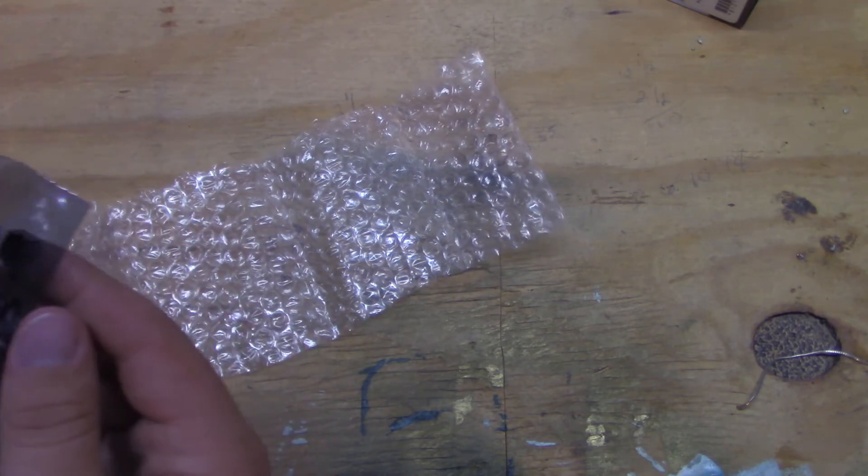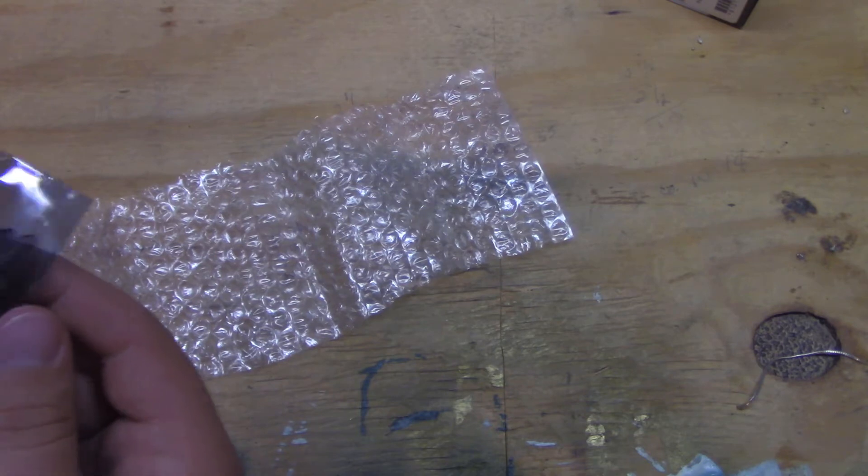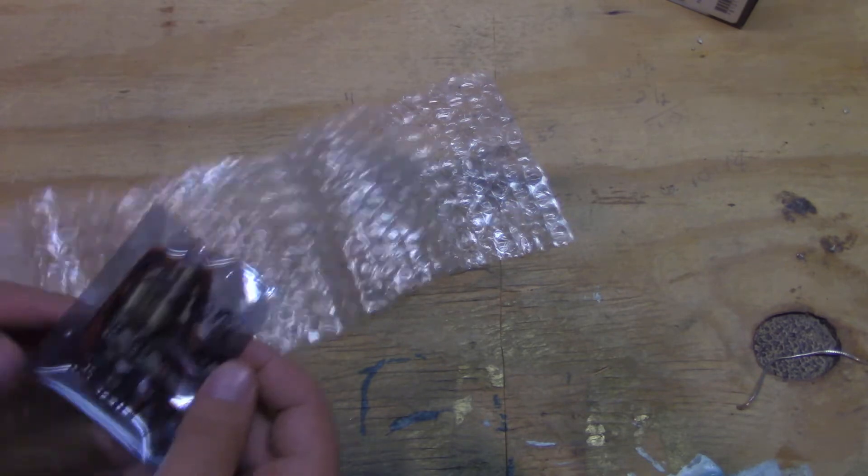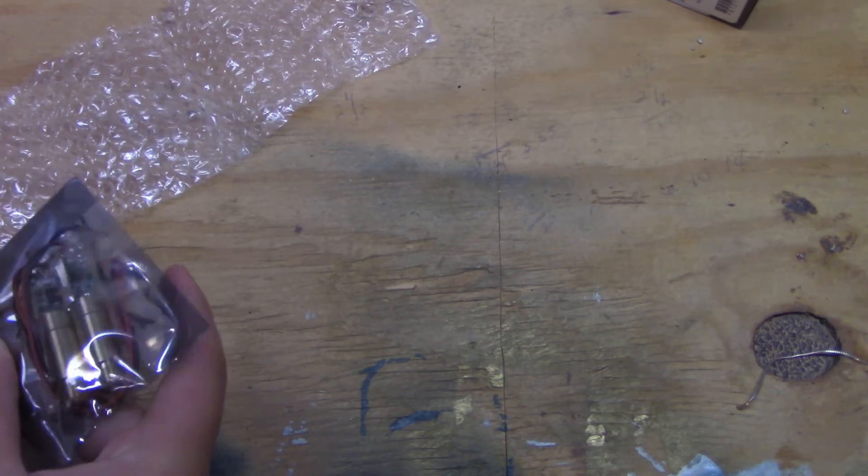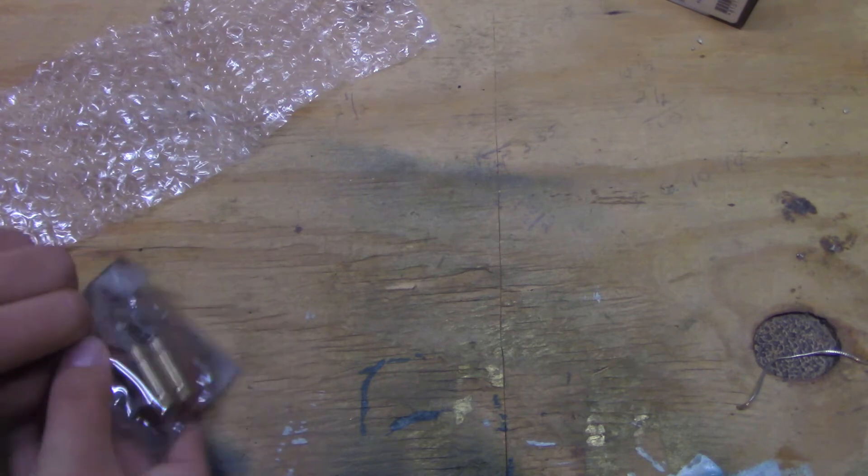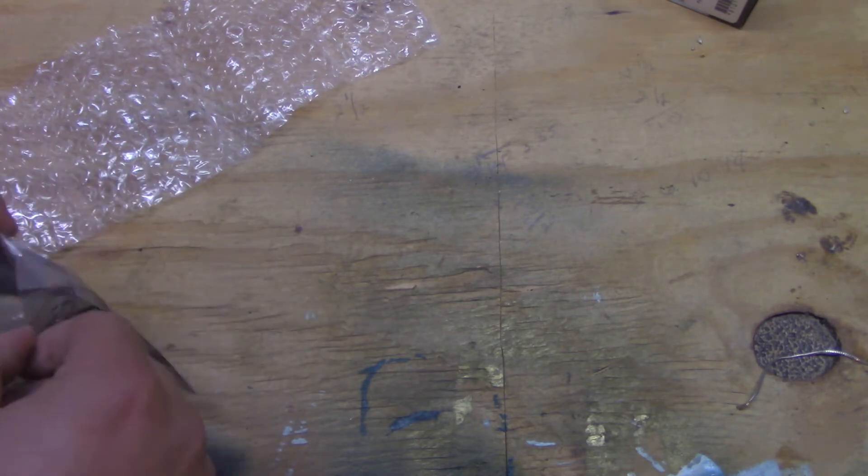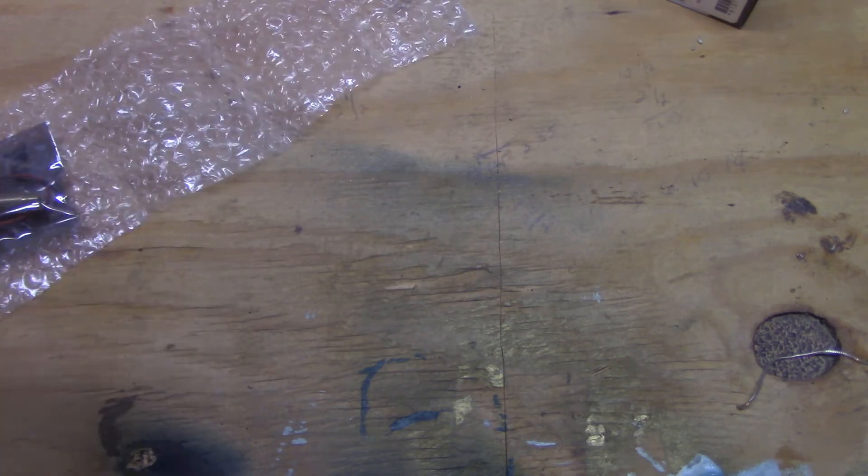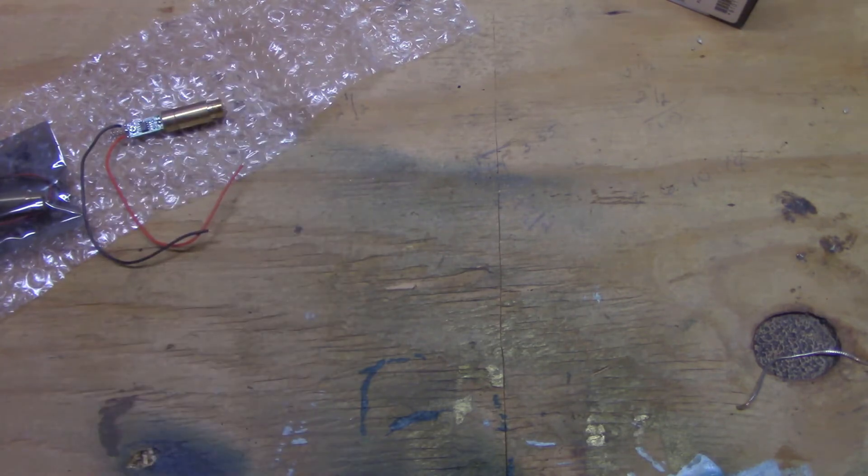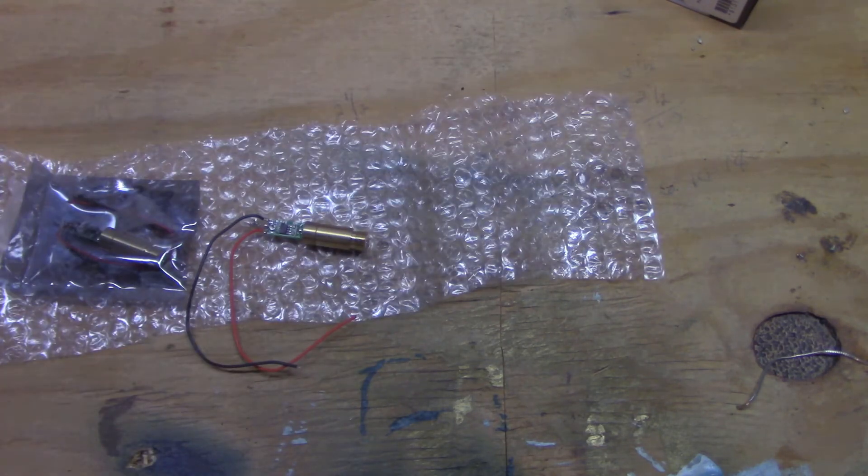Okay, it says 532 NM, that's the color, 100 milliwatt, 3 to 3.7 volts on this written in Sharpie, it looks like. These ones are a little different, they come with wires already on, so I'll have to open the package. I did order two, just in case one would break.